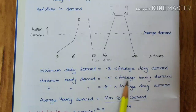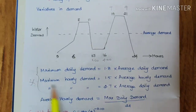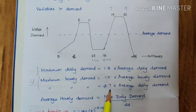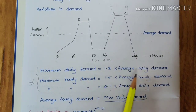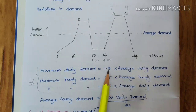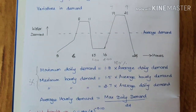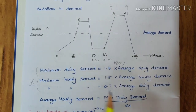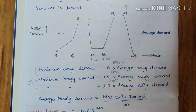The maximum hourly demand is 1.5 times the average hourly demand, and the maximum hourly demand is also equal to 2.7 times the average daily demand. These three formulas are very important and will be asked in objective-type exam questions. They may also be asked as percentages — for example, the maximum daily demand is 180% of the average daily demand, maximum hourly demand is 150%, and 270% of average daily demand.